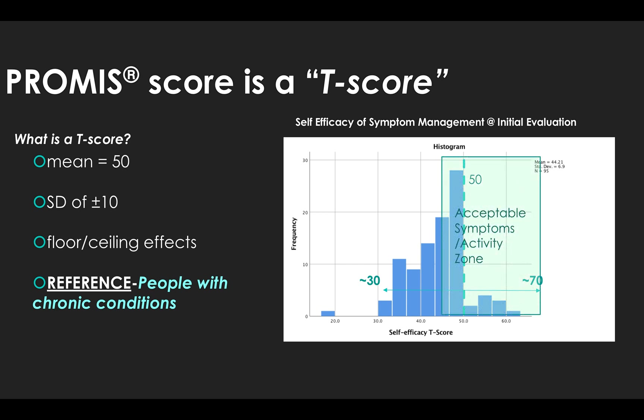The acceptable zone — when patients find their symptoms and activity acceptable — is associated with a score of about 45 in terms of confidence. So if they're within half a standard deviation of other people that manage their chronic conditions, they typically find their physical abilities and whatever symptoms they're having as acceptable.